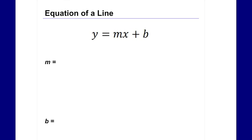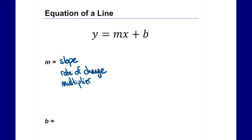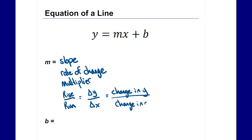In y equals mx plus b, m and b represent two different things. m represents what we call the slope. There are many words for m or slope: rate of change, multiplier, rise over run, or change in y over change in x. The delta symbol is a Greek letter that just means 'change in.' Those are all different terms for the m value and they all mean the same thing — it just depends on whether you're looking at a pattern, a scenario, a graph, or a table.